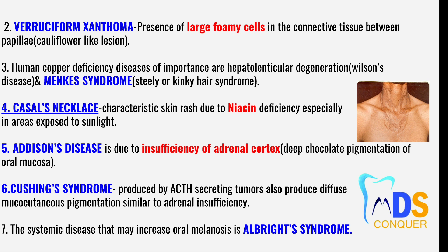Point number five: Addison's disease is due to insufficiency of the adrenal cortex and shows deep chocolate pigmentation of the oral mucosa. Point number six: Cushing syndrome is produced by ACTH-secreting tumors that also produce diffuse mucocutaneous pigmentation similar to adrenal insufficiency.